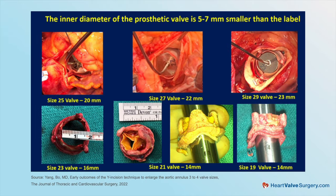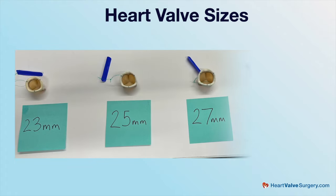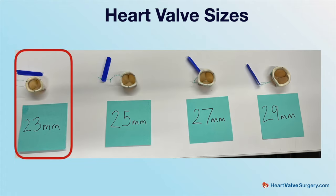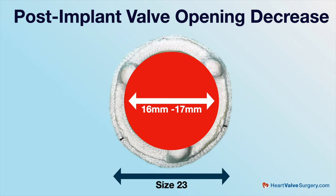Why do patients need this procedure? Because this does add operative time and complexity to the operation. The reason is we found out the real opening of the artificial valve — including mechanical and tissue valves — is much smaller than the label. For example, the most common valve used in the United States is size 23. But after we put the valve in, the opening is about 16–17 millimeters, which reduces the annular area by 40–60%. So those small valves also don't last long, and the patient doesn't get the most benefit from the operation.